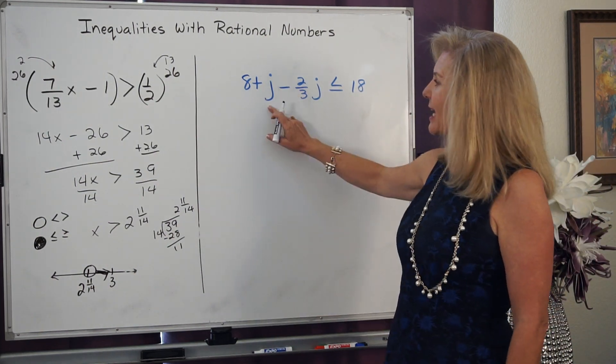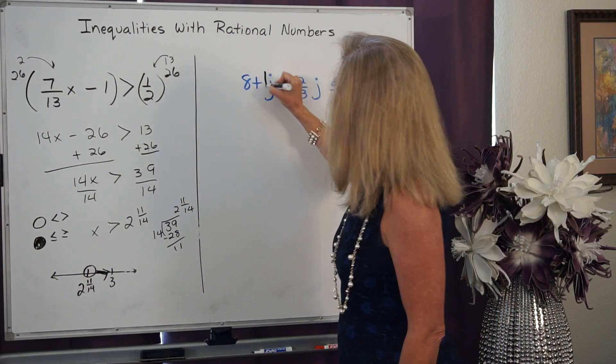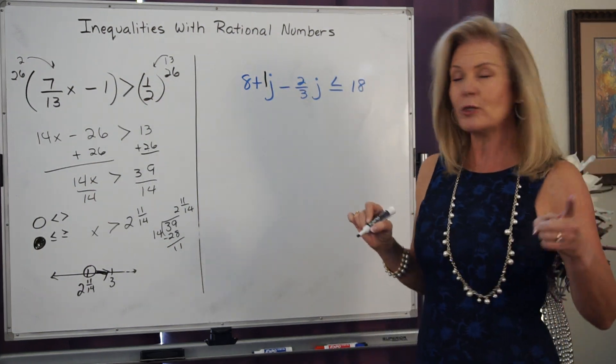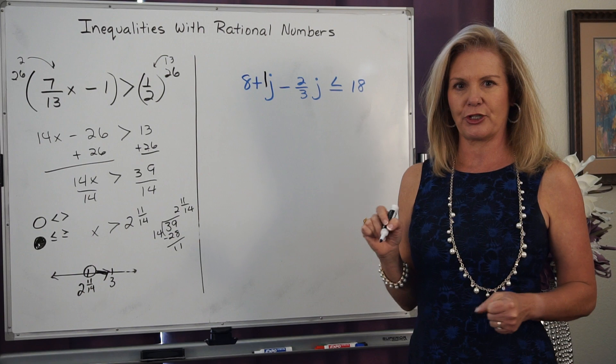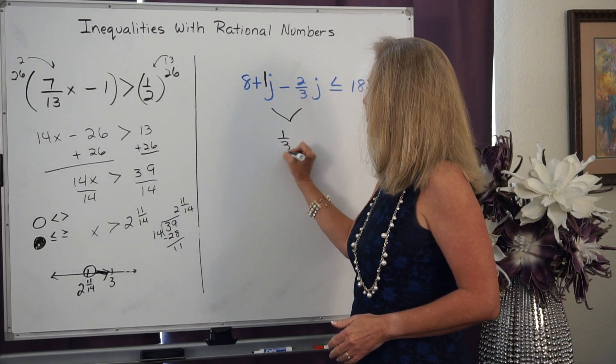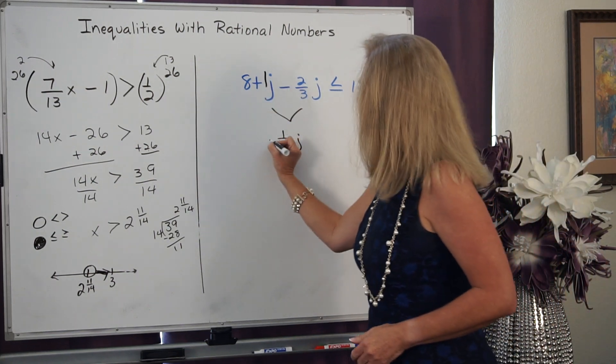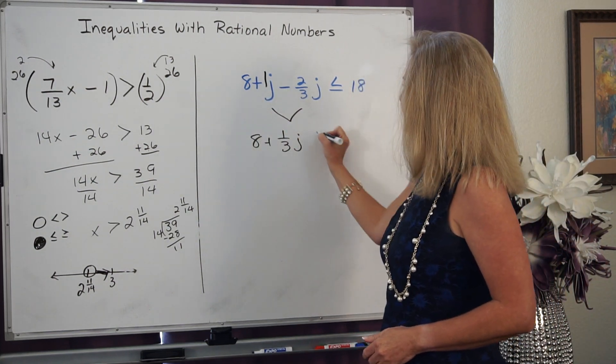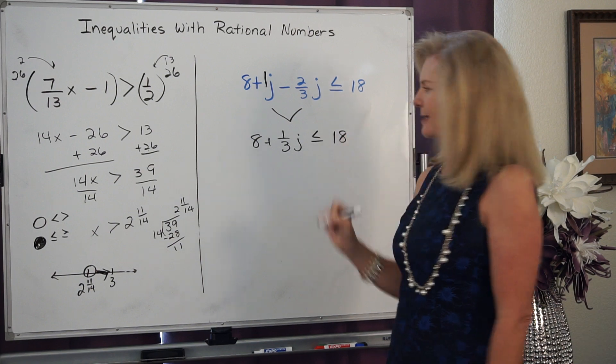And I don't have any number before this J, so I know that that number is a 1. So I have a whole J minus 2/3 J. So I'm going to pull those two together, and I'm left with 1/3 J right there. But I still have this plus 8 on this side, and I have 18 on this side.